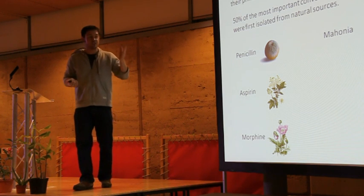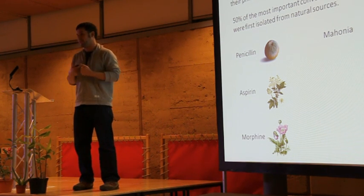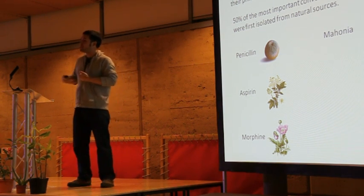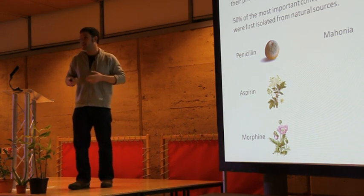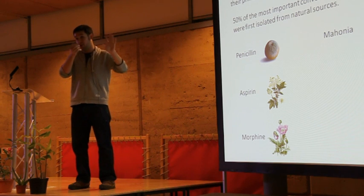Now, Mahonia is really interesting because it not only contains antibacterial agents, it also contains an agent that blocks this pump. So these bacteria that penicillin can't treat can suddenly, with Mahonia, the hope is, be able to find some kind of solution.